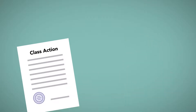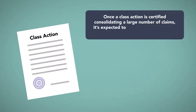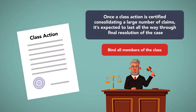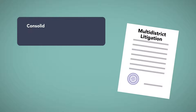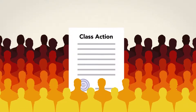The primary difference between the two is that once a class action is certified, consolidating a large number of claims, it is expected to last all the way through final resolution of the case. If there is a trial, it will take place within the class action proceeding and will bind all members of the class. An MDL proceeding, on the other hand, consolidates and transfers many claims to one court only for pretrial proceedings like discovery. We will begin by focusing on the older, perhaps better known method of consolidation: the class action.